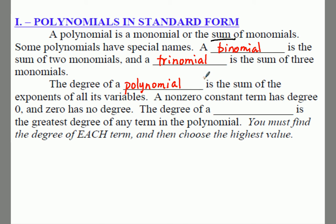It is the sum of the exponents of all its variables. A non-zero constant term has degree zero, and zero has no degree. The degree of a polynomial is the greatest degree of any term in the polynomial. So what we're going to do is we're going to have to find the degree of each term and then choose the highest value. Do not add them all together.